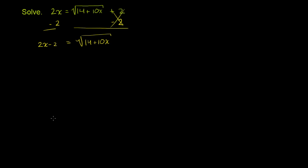Now we can square both sides. This is the step where we're losing information, because when we square the right-hand side, we get 14 plus 10x. We would have also gotten this if it was the negative square root — but that would have been a fundamentally different problem. One of our answers might actually satisfy that equation rather than the one we need to solve, which uses the principal square root.